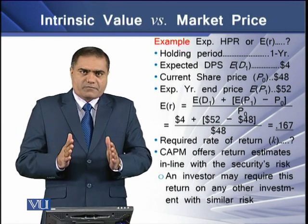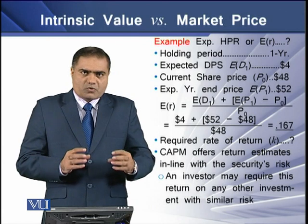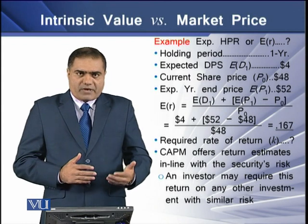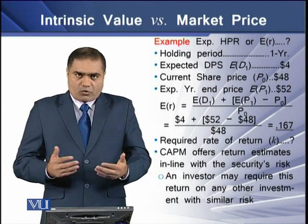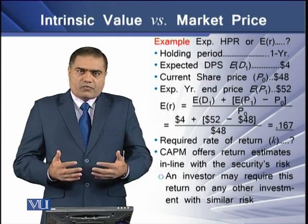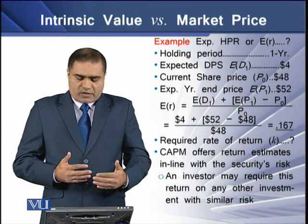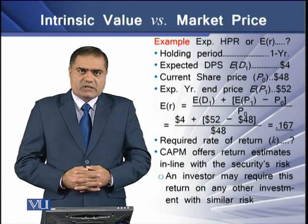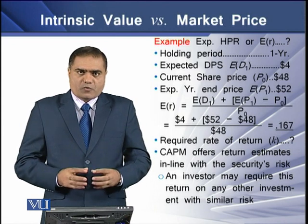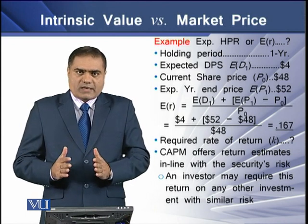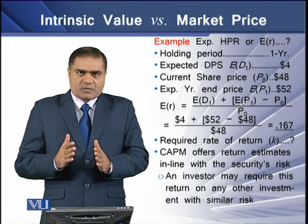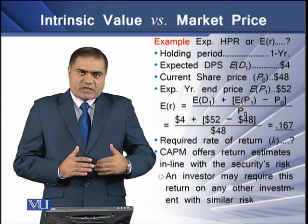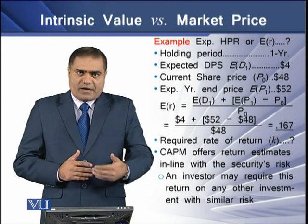So we need to determine two values: the dividend yield and the capital gain. We divide both the dividend and the capital gain over the opening price, and the resulting figure is 0.167, or 16.7%. That is the return that this particular security is expected to give at the end of the year — the expected return.